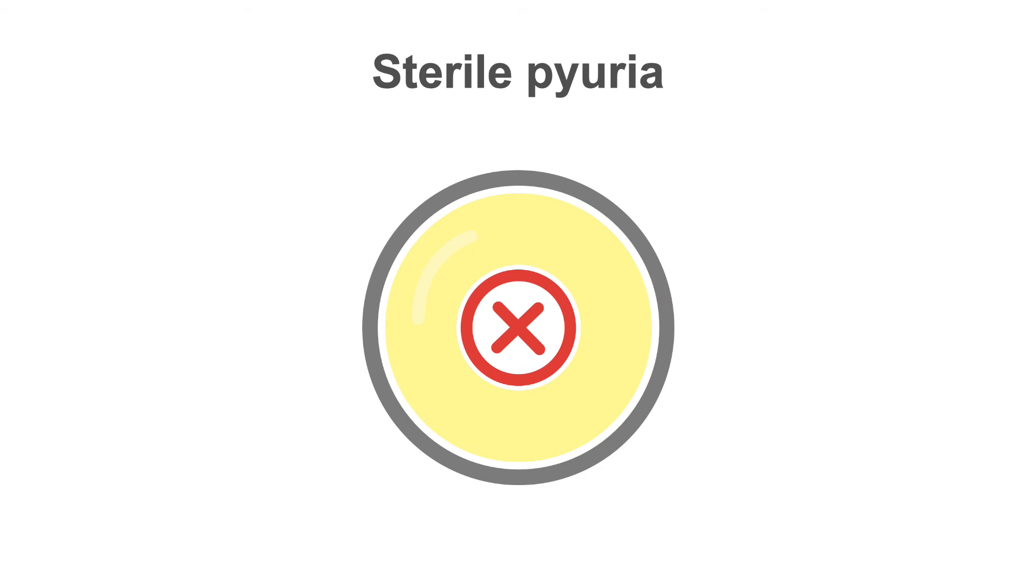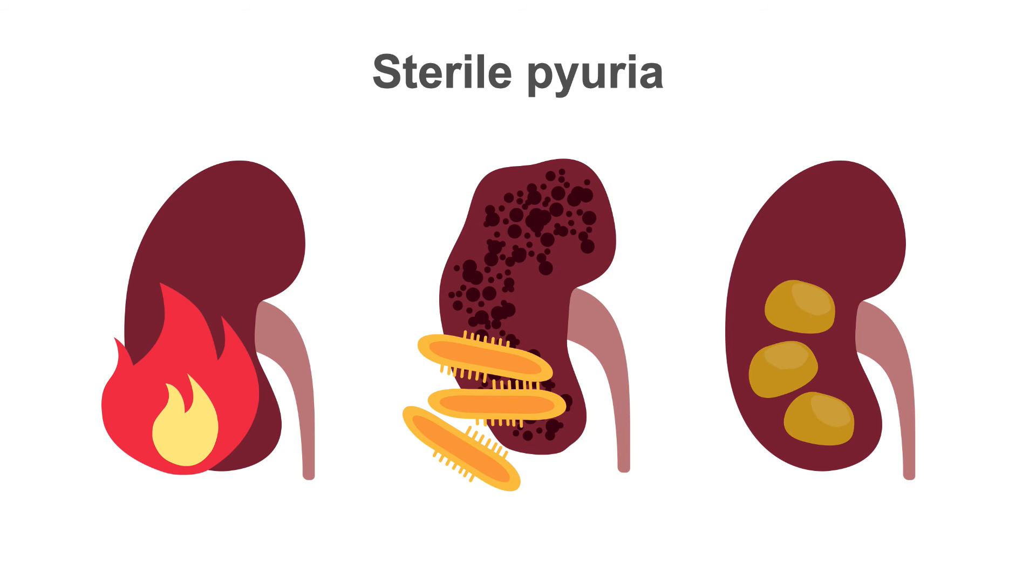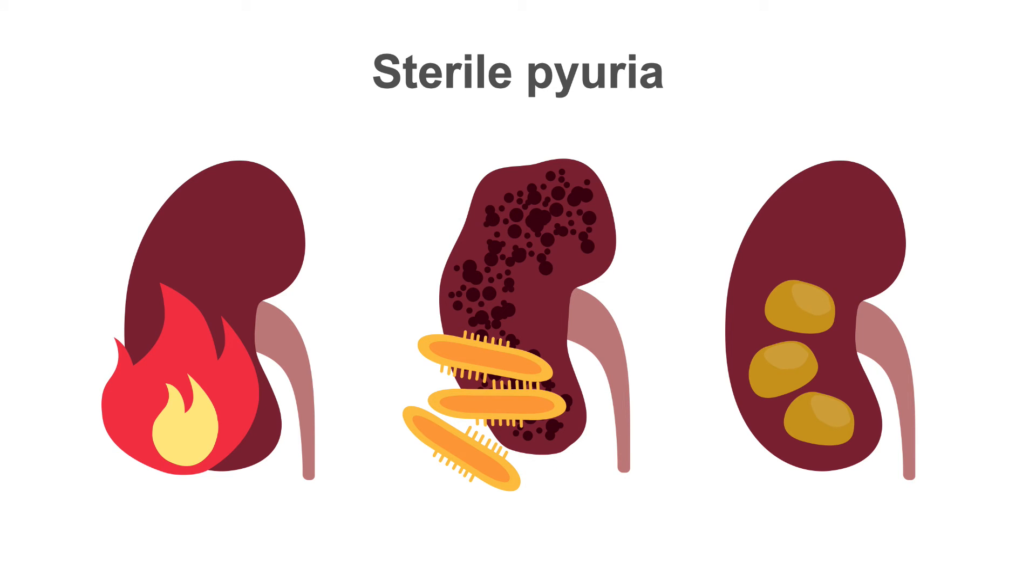However, if the corresponding urine culture is negative, known as sterile pyuria, then interstitial nephritis which is inflammation of the interstitium of the kidney, renal tuberculosis and nephrolithiasis should be considered.